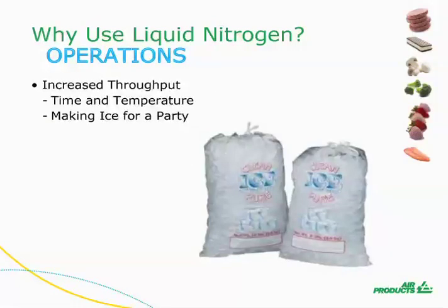Let's say that you're having a party on Saturday evening. You get home from work on Friday and you start collecting ice from your ice maker. If your freezer operates at zero degrees, maybe you can make a batch of ice in two hours. By Saturday, you've collected some quantity of ice. If, on the other hand, your freezer operated at liquid nitrogen temperatures, like 150 degrees below zero, you could make a batch of ice in a matter of minutes.